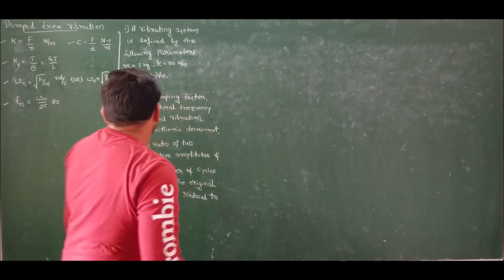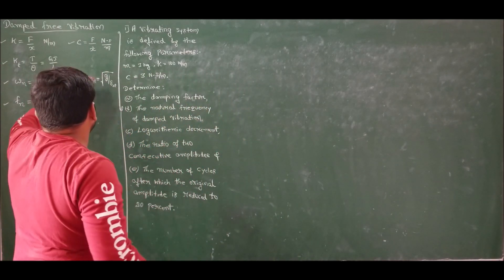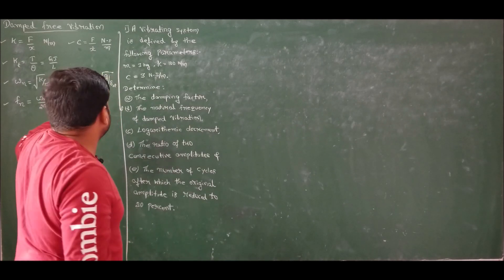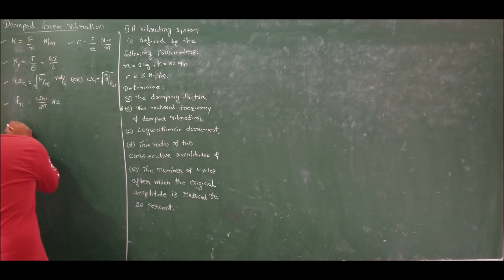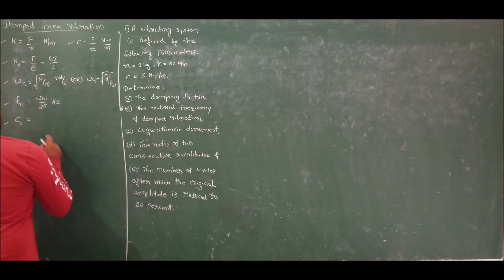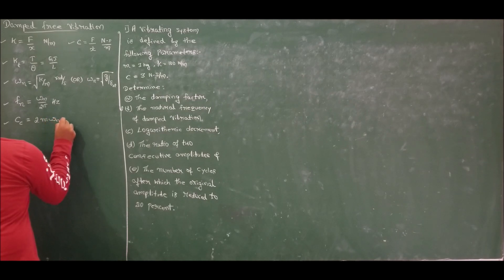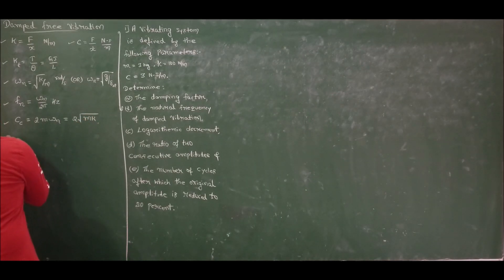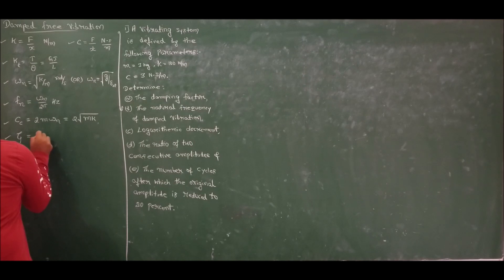Coming to damped free vibration, the first concept is the damping coefficient, defined as force per unit velocity. We derived an expression for the critical damping coefficient c_c, given by 2m*omega_n, which also equals 2*sqrt(mk). The damping factor zeta is given by c divided by c_c.